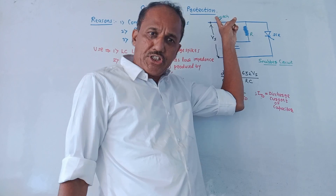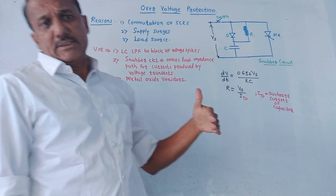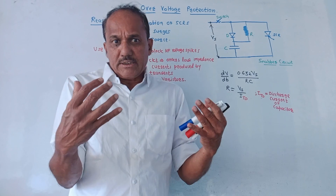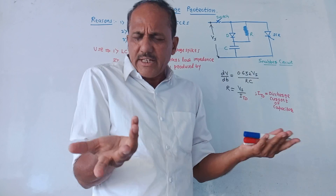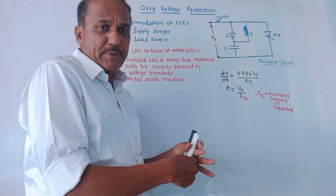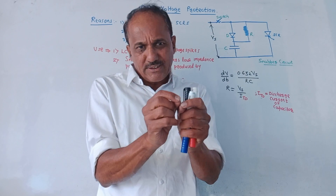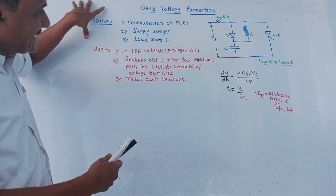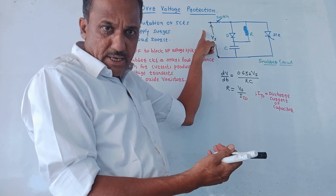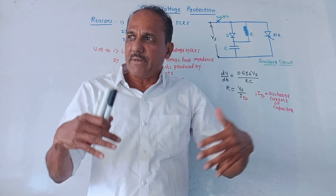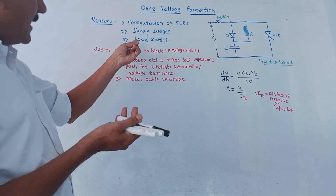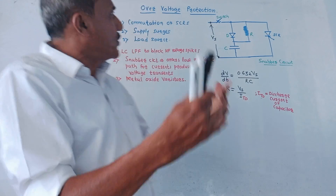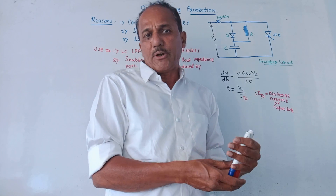The next part is overvoltage protection. Manufacturers always specify certain voltage limits applied across power devices such as SCR. But due to certain reasons, the voltage across that particular device gets exceeded, which may damage the SCR. Common reasons include commutation of SCRs, supply surges from the main supply, or issues related to the load source. These generate voltage spikes that may damage the particular power device.